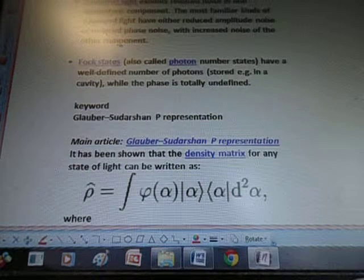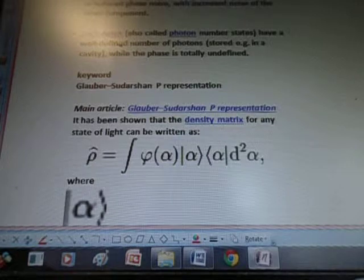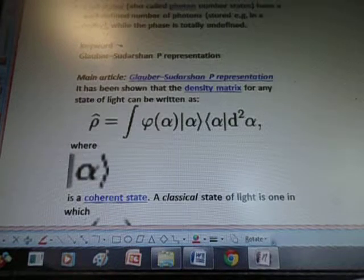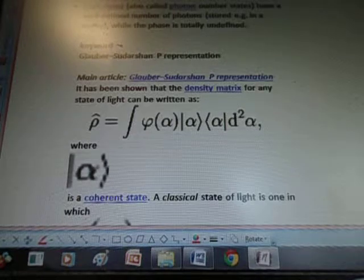Keyword: Glauber-Sudarshan P Representation. It has been shown that the density matrix for any state of light can be written as, and there's the formula that they have.